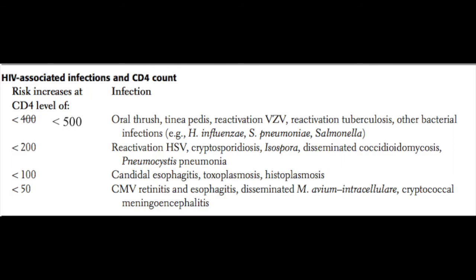Once CD4 levels drop below 200, we start to see reactivation of herpes simplex virus, cryptosporidiosis, Isospora development, disseminated coccidioidomycosis, and pneumocystis pneumonia. As levels continue to drop below 50, we see CMV retinitis and esophagitis, disseminated MAC complex infection, and cryptococcal meningoencephalitis.